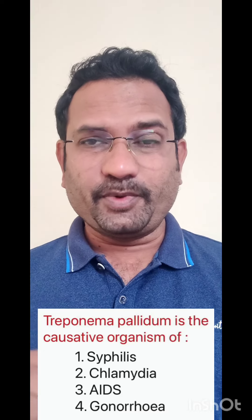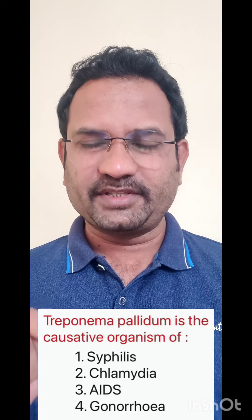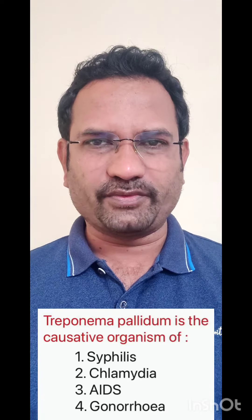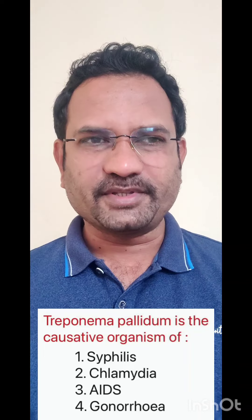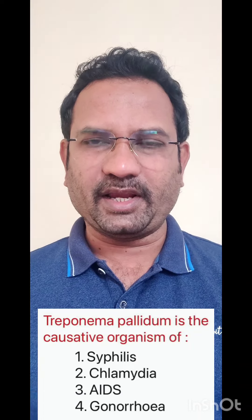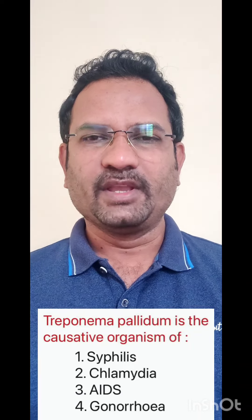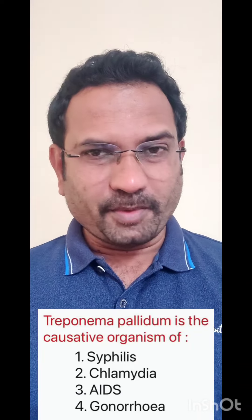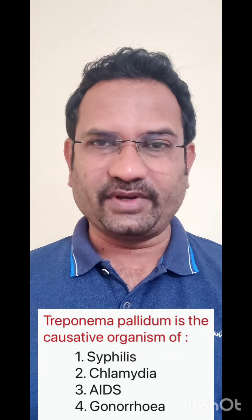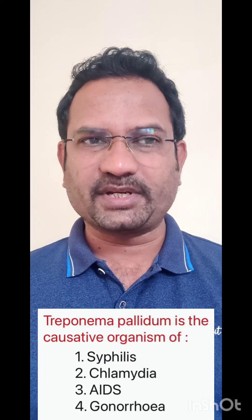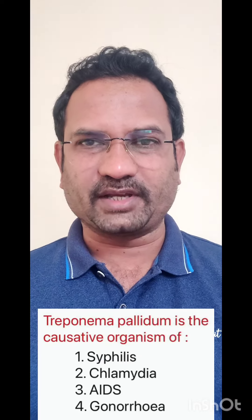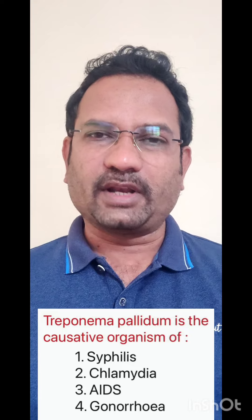The first question is: Treponema pallidum is the causative organism of? Options given are syphilis, chlamydia, AIDS, and gonorrhea. Now Treponema pallidum is a bacteria which causes syphilis, so option A or option 1 is the correct one.